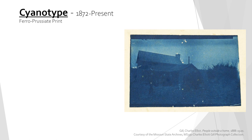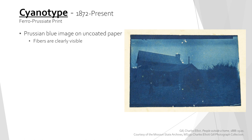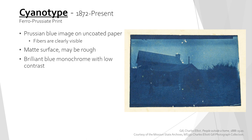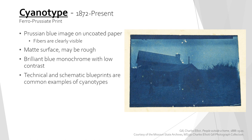Cyanotypes were used commercially starting in 1872 and are still made today. Prussian blue pigment is used to create the image on uncoated paper, meaning that the paper fibers will be clearly visible. The surface of the uncoated paper is matte and may have a rough texture. The image produced is a brilliant blue monochrome with low contrast. A common cyanotype is the blueprint, which was frequently used for technical and schematic drawings until the 1940s.